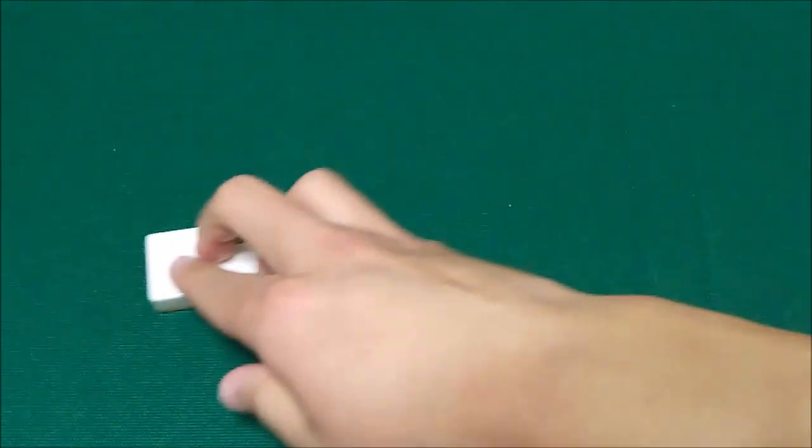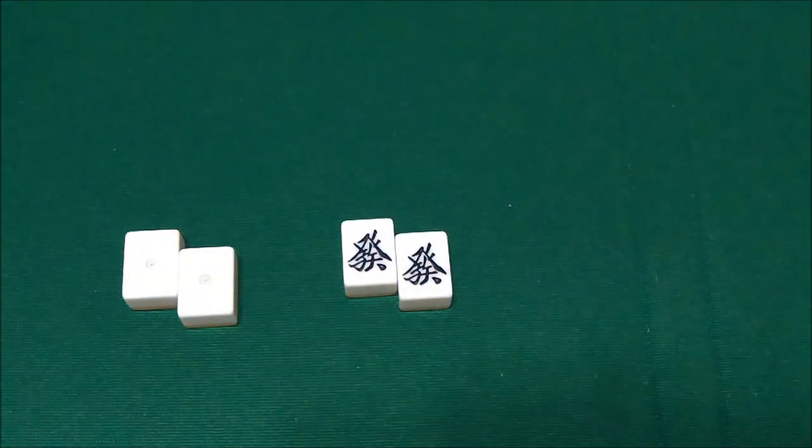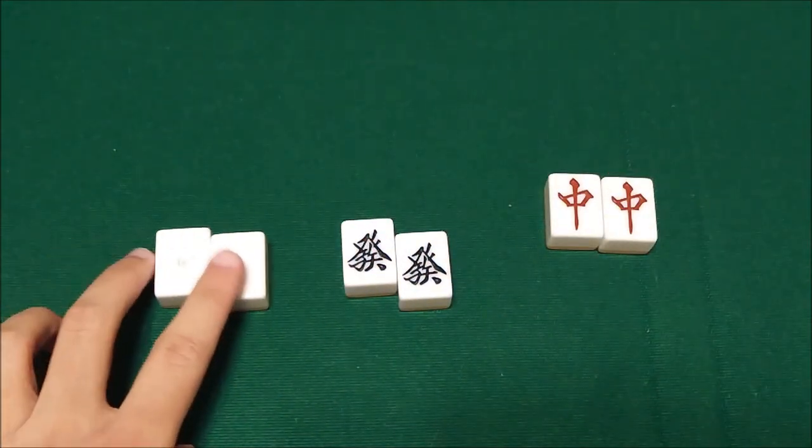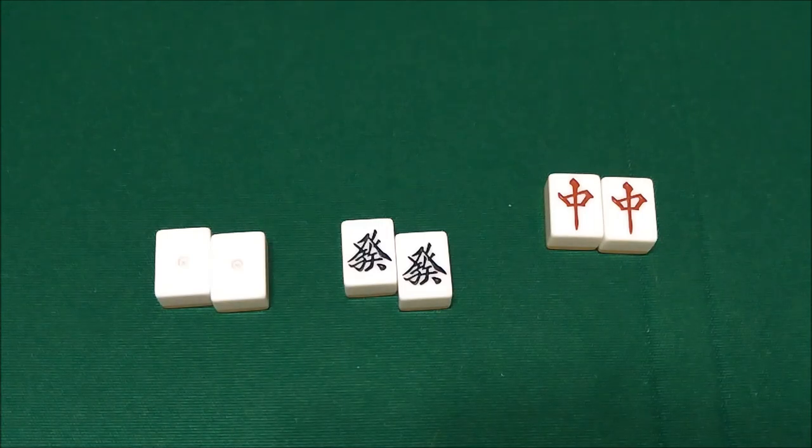One more way to get Fu is from your pair. Now only certain pairs are worth Fu. A pair of any of the dragon tiles is worth 2 Fu. That's it. It's very simple. If it's a pair of the dragon tiles, it's worth 2.